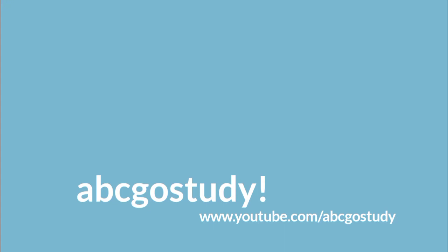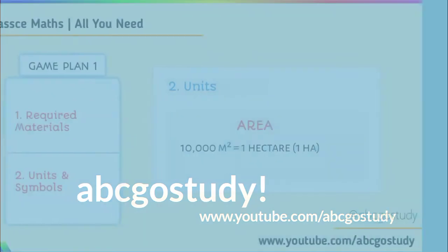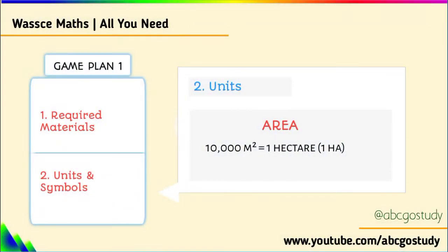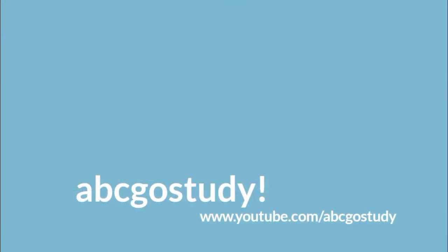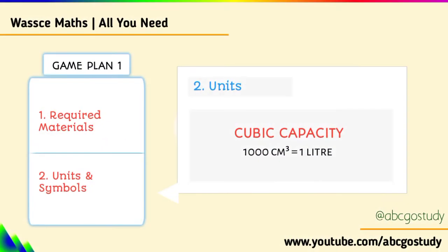Moving to area, you should know that 10,000 square meters equals 1 hectare. You should also know that under cubic capacity, 1000 cubic centimeters equals 1 liter.